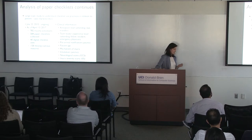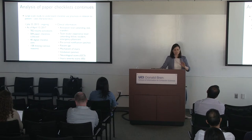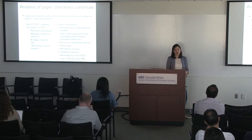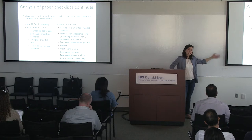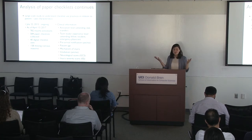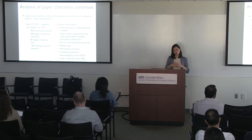We are continuing analysis of paper checklists over the past five years as the practice has stabilized. We started another dataset in July 2015 and are still collecting. As of yesterday, we have about 782 trauma cases and were able to collect 584 checklists for those — 40 of those already digital because we started the digital trial. We have some missing for various reasons. This time we're also collecting a lot more clinical information, so we can look at whether checklist use correlates with patient case or environment characteristics.